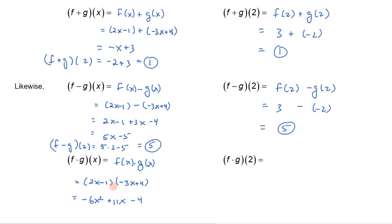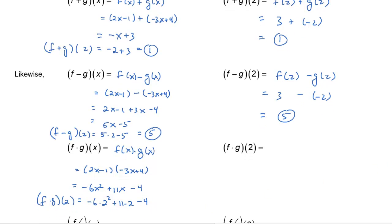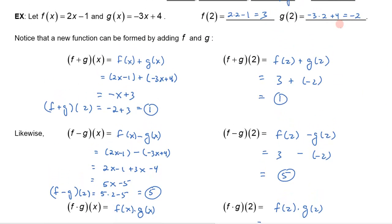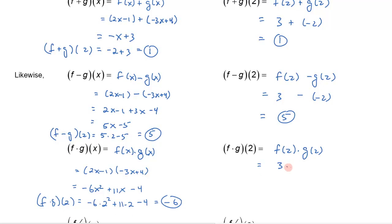So here's the new function that's the product of the two functions: negative 6x squared plus 11x minus 4. If I wanted (f times g)(2), I plug 2 in: negative 6 times 4 plus 11 times 2 minus 4. That's negative 24 plus 22 minus 4, which gives negative 6. In this case it would have been easier to just do f(2) times g(2). We saw that f(2) was 3 and g(2) was negative 2, and sure enough, 3 times negative 2 gives the same value: negative 6.